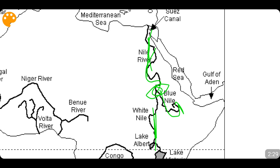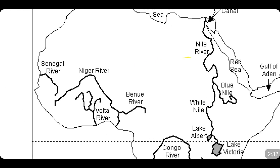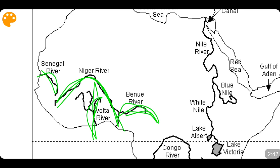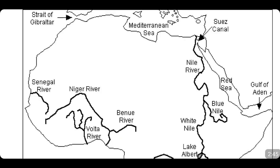Coming to the western part of Africa, you can see the Senegal River and the Niger River. One major tributary of Niger River is the Benue River, and this is the Volta River. In the upper channel you can find the Mediterranean Sea and the Strait of Gibraltar. The Strait of Gibraltar connects the Mediterranean Sea with the Atlantic Ocean. On the western end of Africa it's the Atlantic Ocean; on the eastern end of Africa it's the Indian Ocean.